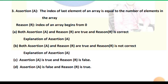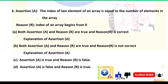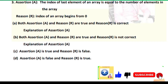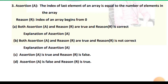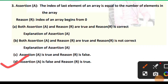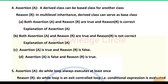Question 3 — Assertion: The index of the last element of an array is equal to the number of elements in the array. Reason: The index of an array begins from zero. The index of the last element is one less than the number of elements, not equal to it. For example, with 10 elements, the first index is zero and the last is nine. So assertion is false and reason is true.